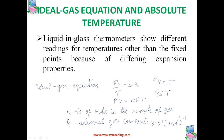With a constant volume gas thermometer, temperature is read in terms of pressure. A plot of pressure versus temperature gives a straight line.